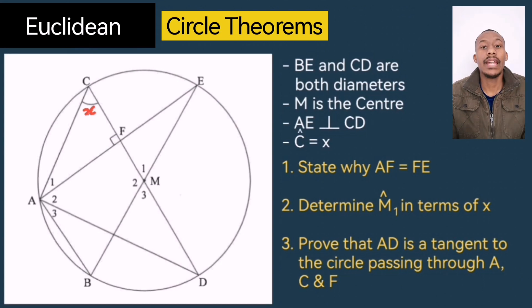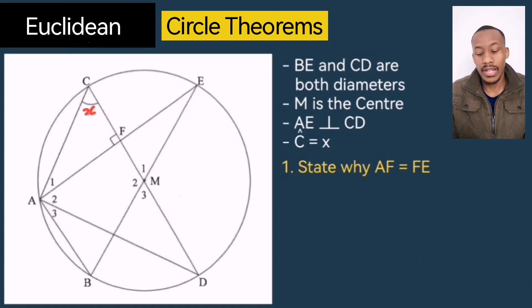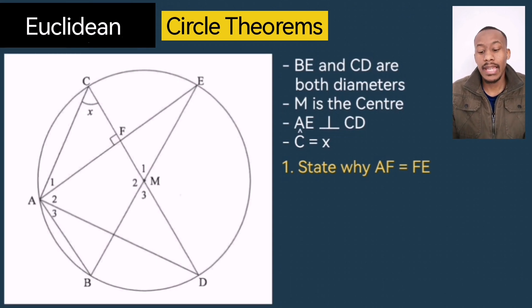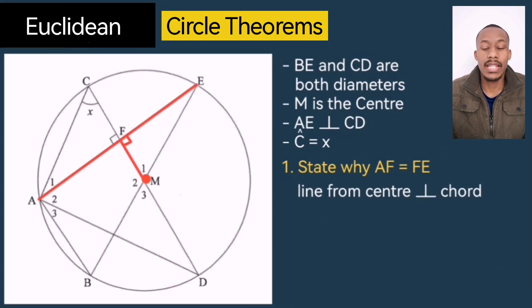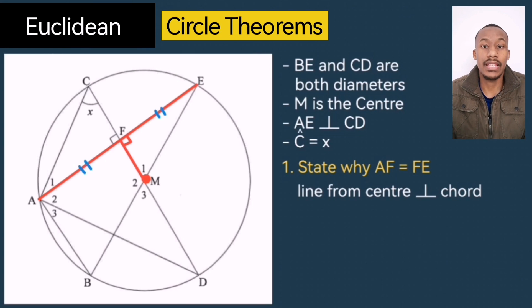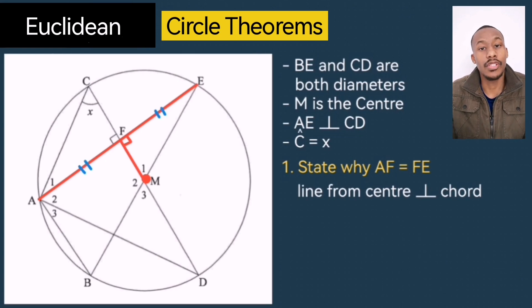For the first question, prove AF equals FE. I'll use the theorem: M is the center of the circle, and a line drawn from the center of a circle perpendicular to a chord would bisect that chord. Therefore AF equals FE — just give that reason and that's it.